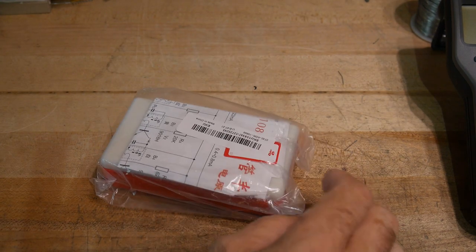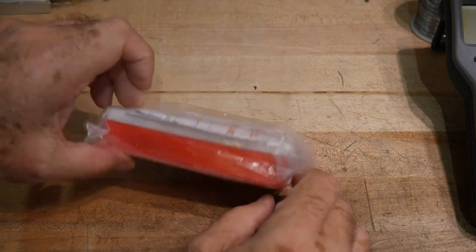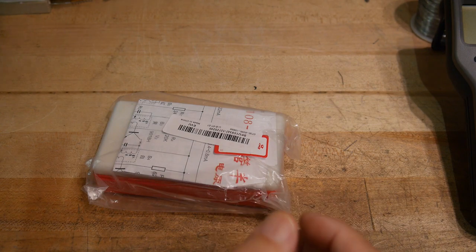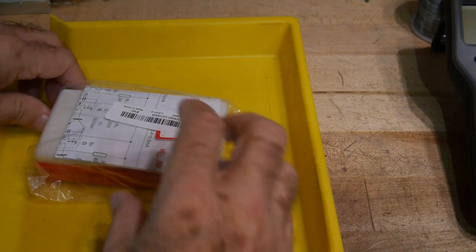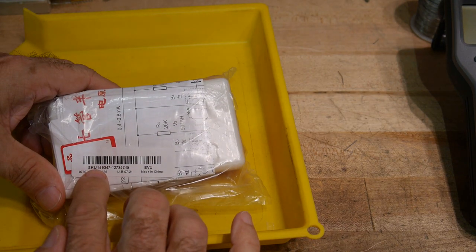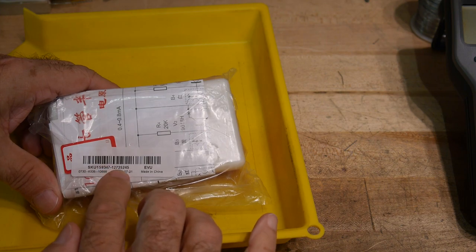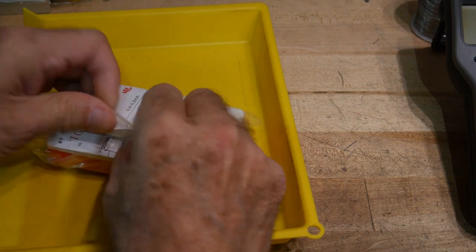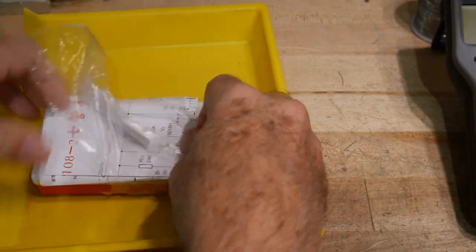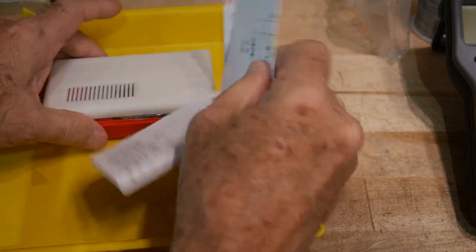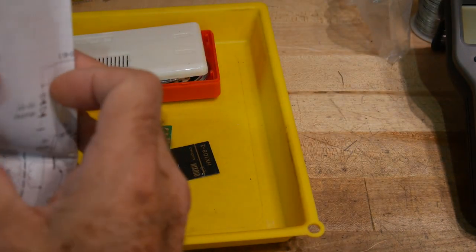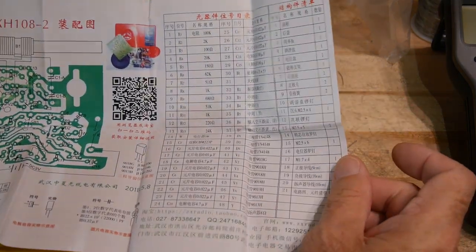All right, it's Chinese kit time. This one is a radio. I don't remember what kind of radio. It's FM or AM. Let's take a look.